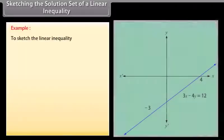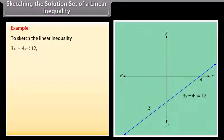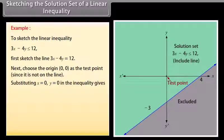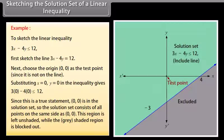Example: To sketch the linear inequality 3X minus 4Y ≤ 12. First, sketch the line 3X minus 4Y equals 12. Next, choose the origin (0, 0) as the test point since it is not on the line. Substituting X=0, Y=0 in the inequality gives 3(0) minus 4(0) ≤ 12. Since this is a true statement, (0, 0) is in the solution set, so the solution set consists of all points on the same side as (0, 0). This region is left unshaded while the gray shaded region is blocked out.